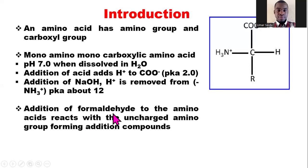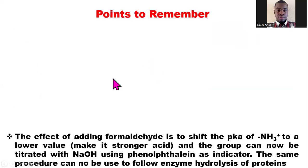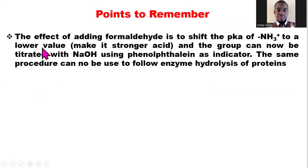When formaldehyde is added to the amino acid, it reacts with the uncharged amino group to form addition compounds. The key point is that adding formaldehyde shifts the pKa of the amino group to a lower value, making the amino acid solution a stronger acid. The addition product that is formed can then be titrated with sodium hydroxide using phenolphthalein as indicator. The same procedure can be used to follow enzyme hydrolysis of proteins.